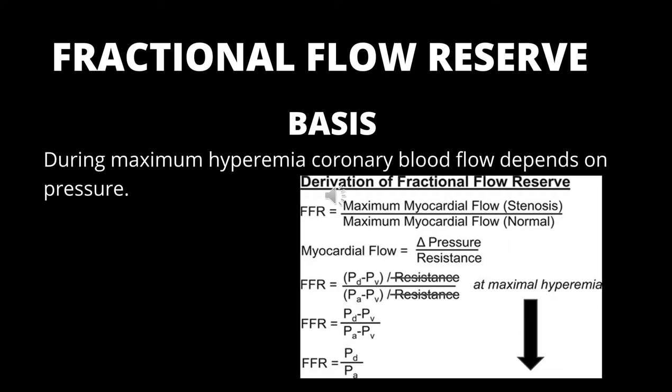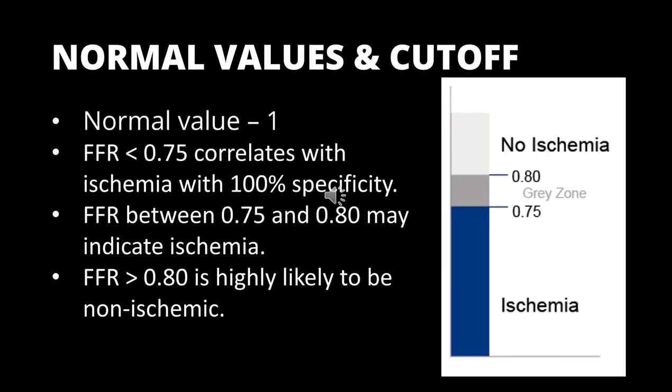Ohm's law states that flow is equal to pressure divided by resistance. So when resistance is constant, changes in pressure are proportional to changes in flow. What we measure is the pressure across the lesion during maximal hyperemia. The aim of this hyperemia is that coronary resistance remains at its lowest and remains constant. This allows flow to be directly related to pressure. The normal value of FFR is 1.